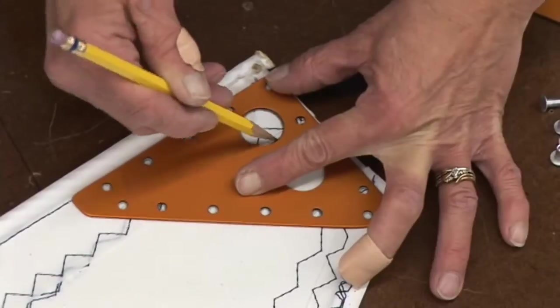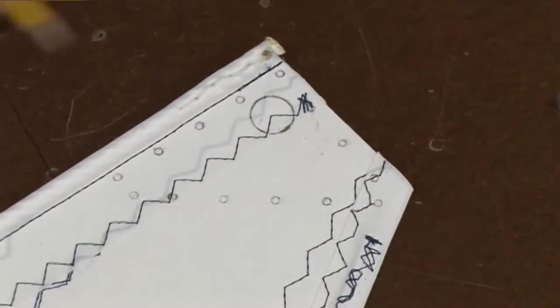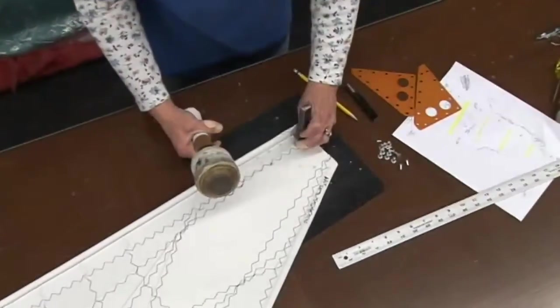We're going to mark only this larger hole here. We don't need to punch two holes, just one. That's for the halyard attachment.